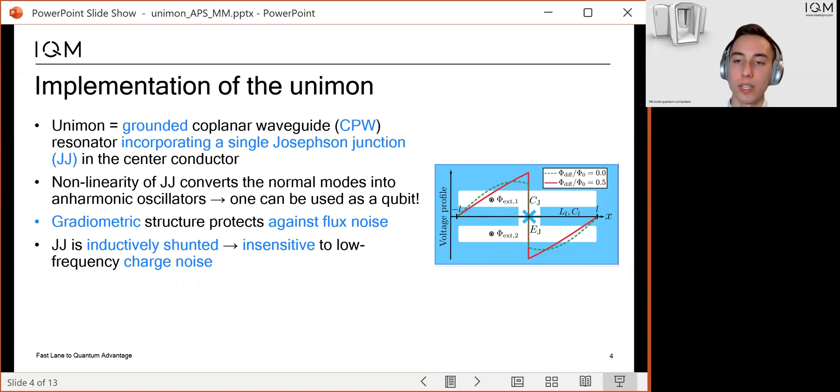Now I will tell you how we implement the Unimon. The Unimon consists of a grounded coplanar waveguide resonator, the center conductor of which is interrupted by a single Josephson junction. The figure here represents a schematic of the Unimon circuit.